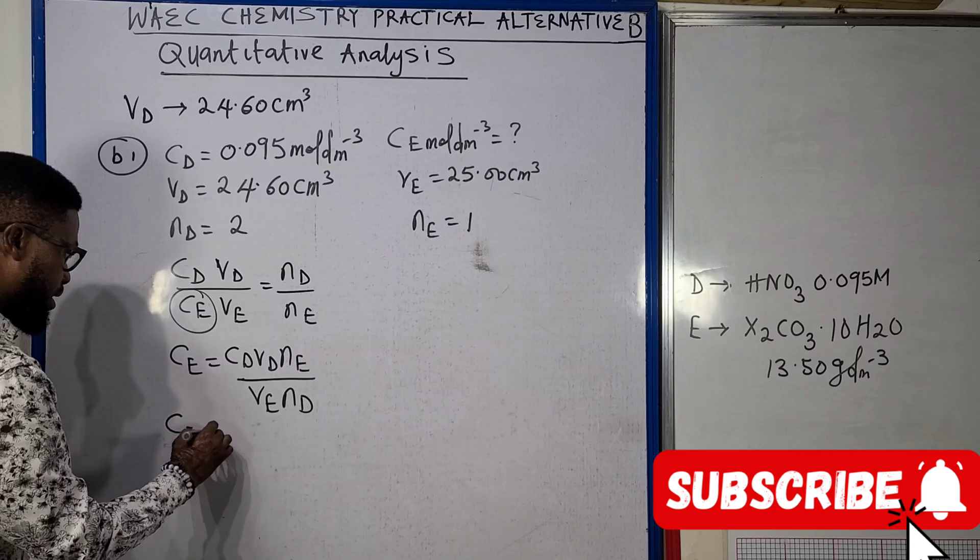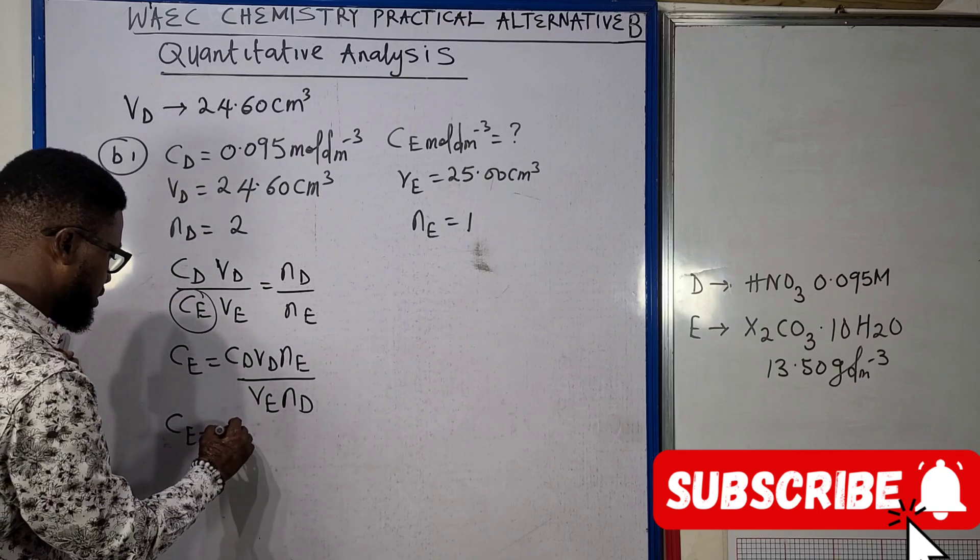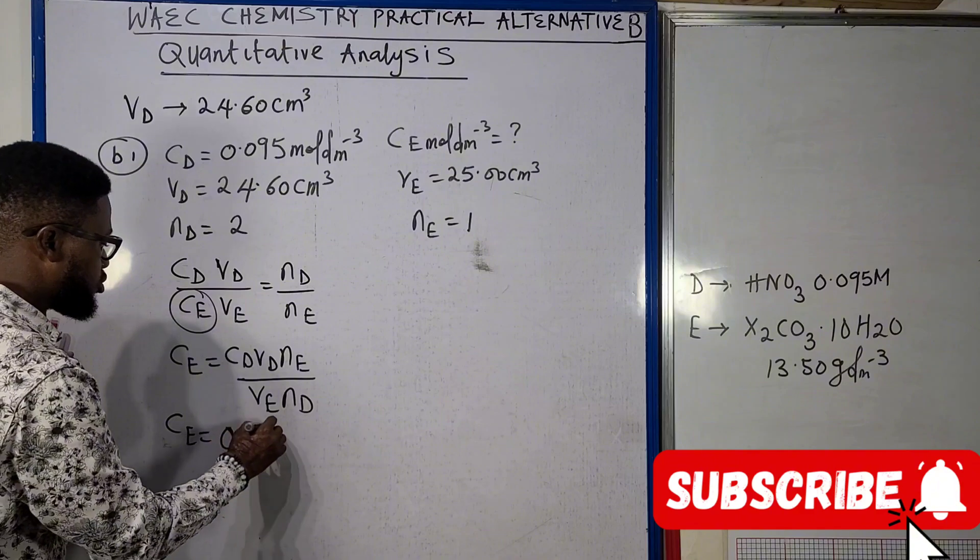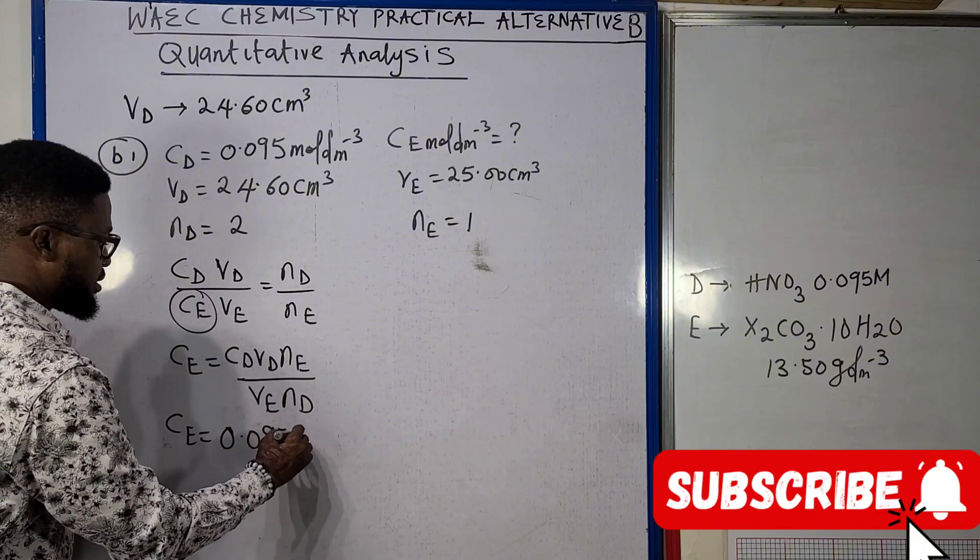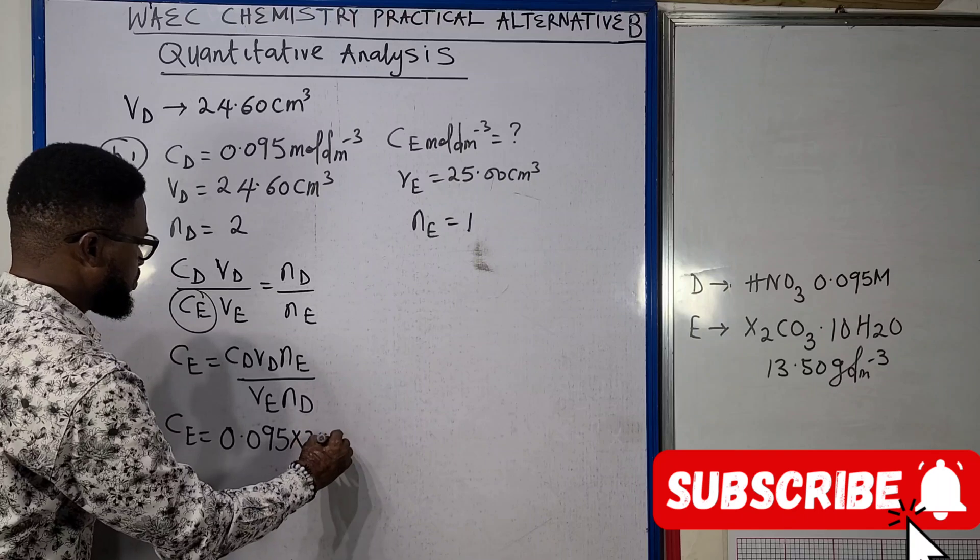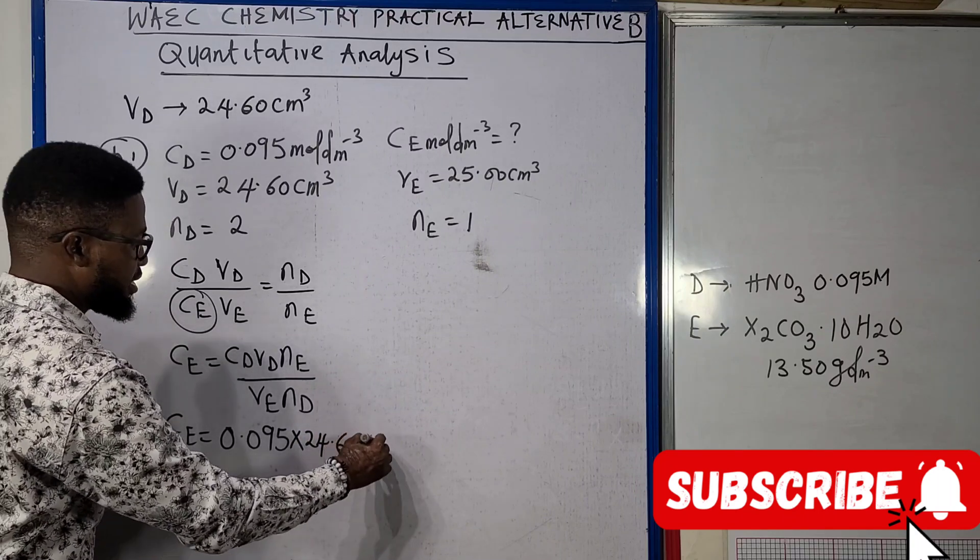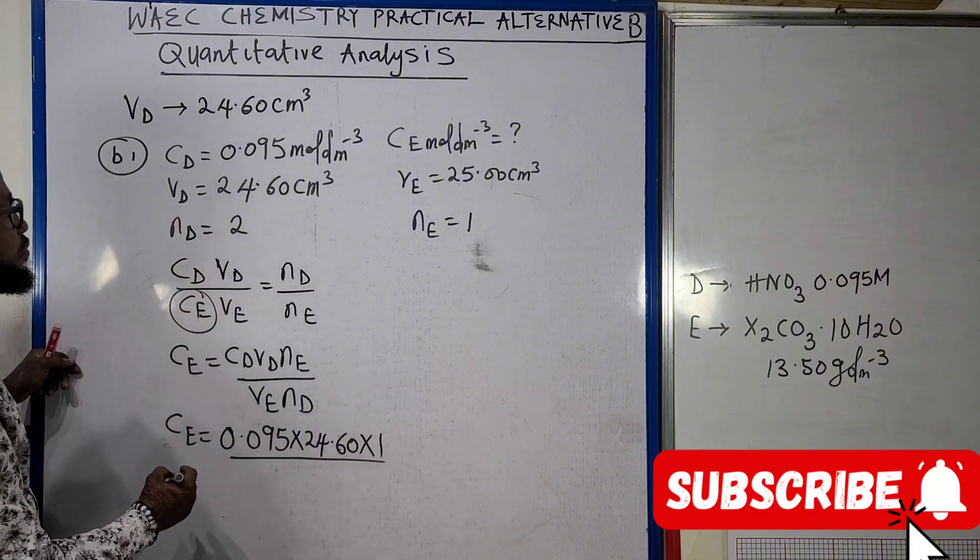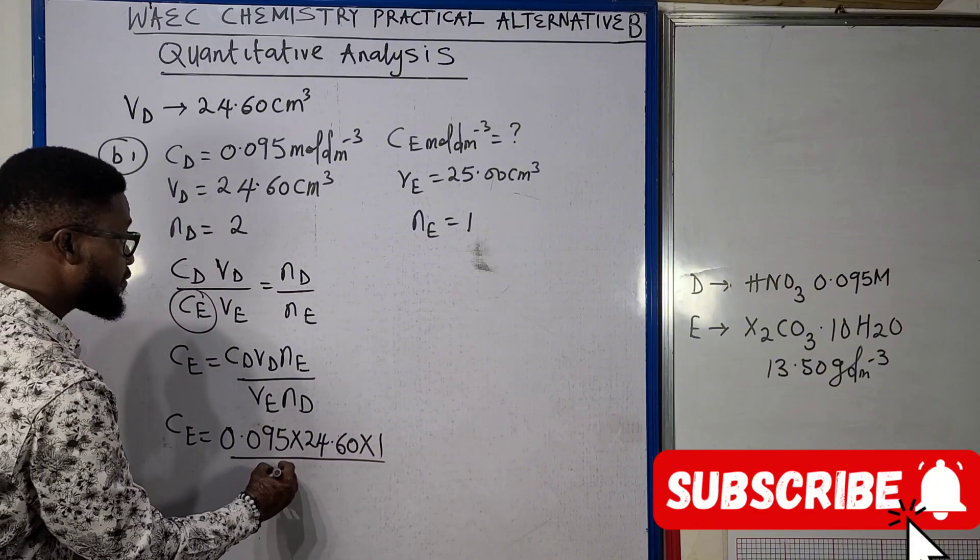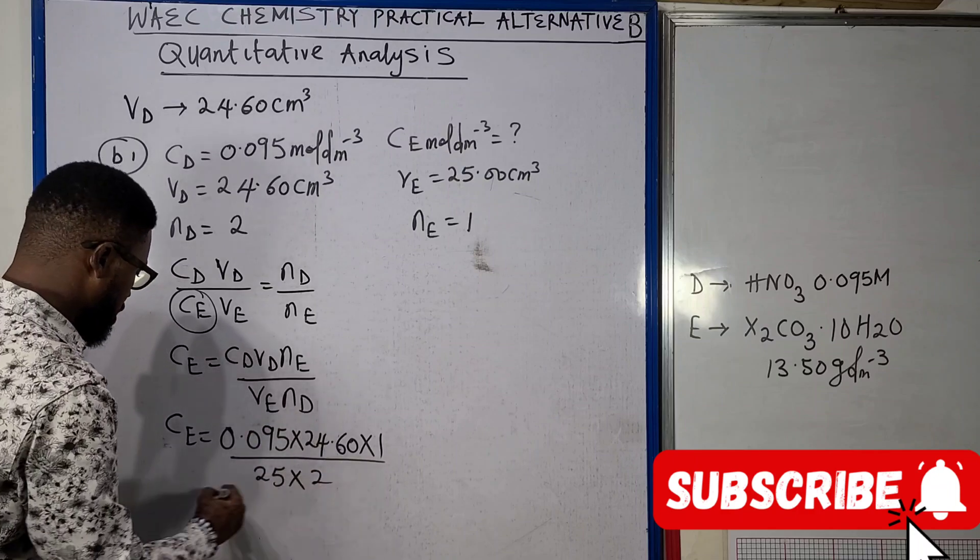So CE: what is our CD? Our CD here is 0.095 times what is our VD? 24.60. What is our NE? 1, all divided by VE here is 25 times what is our ND? 2.